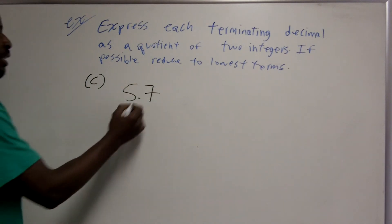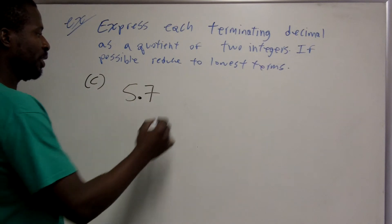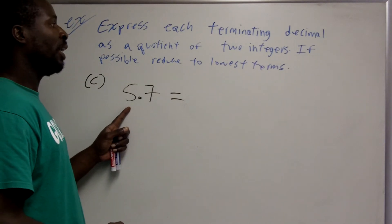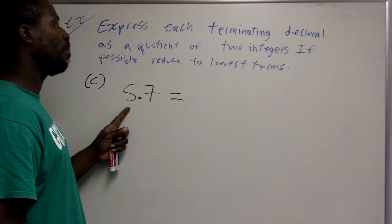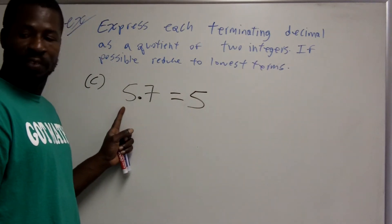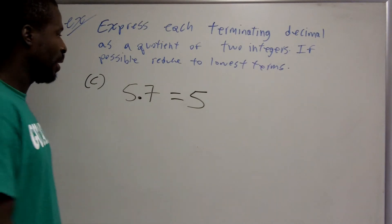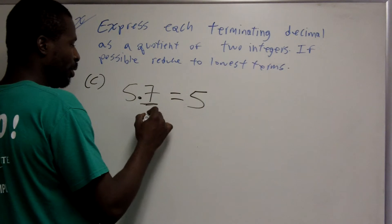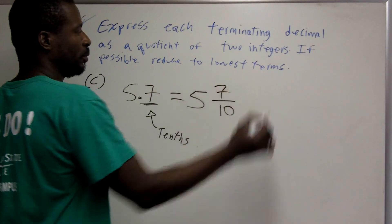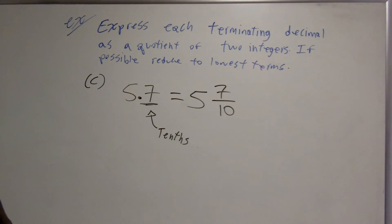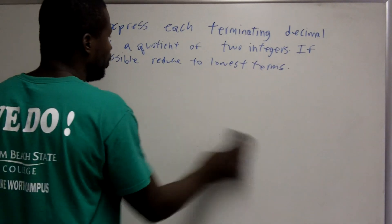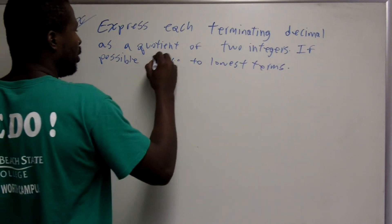Let's try 5.7. We write this terminating decimal as a quotient of two integers. There's a 5 for the whole number part, so we write this as a mixed number — the whole number part is 5. The last digit is in the tenths place, so the denominator is 10, and the fraction part is 7 tenths. The answer is 5 and 7 tenths. That is how we change terminating decimals to rational numbers.